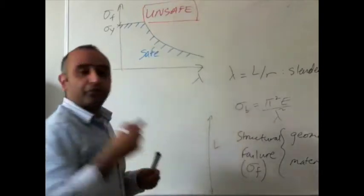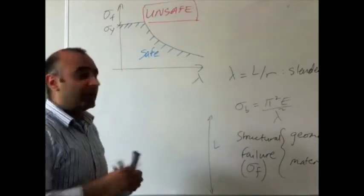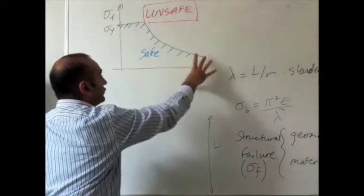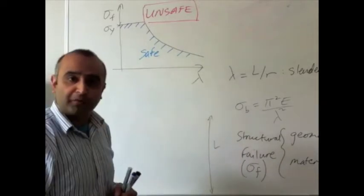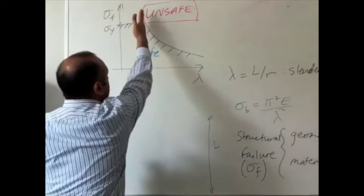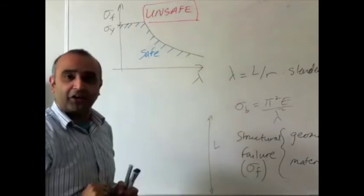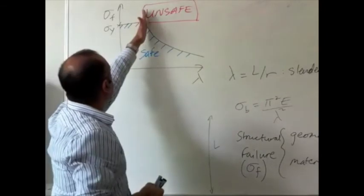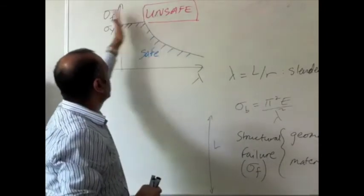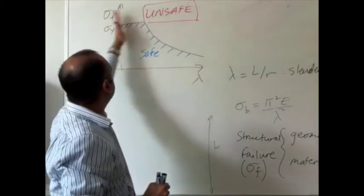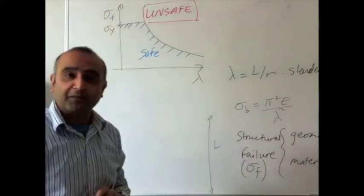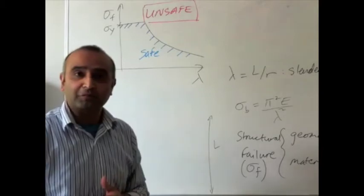And so the geometry actually governs whether we have a geometric dominated failure, which is where the curve defines our safe region, and where the material is important, which is defined by where the flat line of the sigma y, the yield stress, is our safe region.